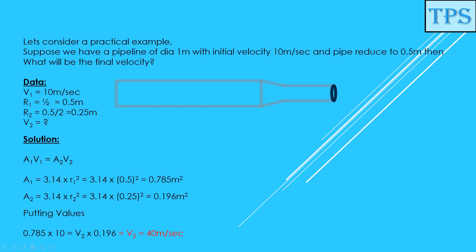Let's consider a practical example. Suppose we have a pipeline of diameter 1 meter with initial velocity 10 meters per second, and the pipe reduces to 0.5 meters. What will be the final velocity?